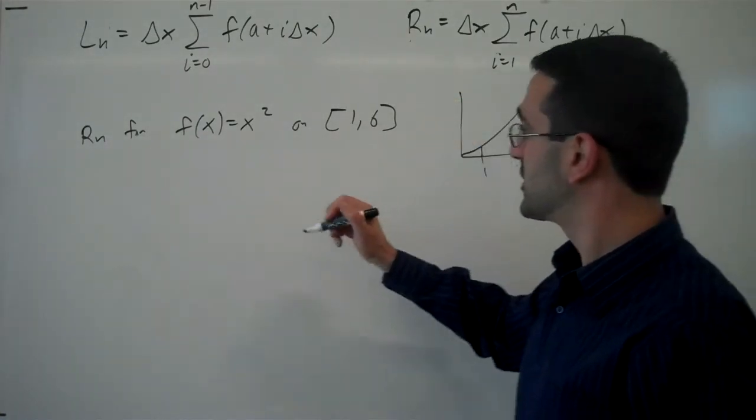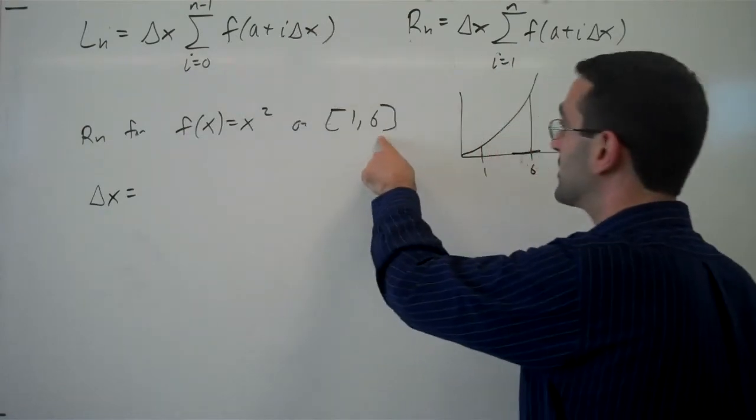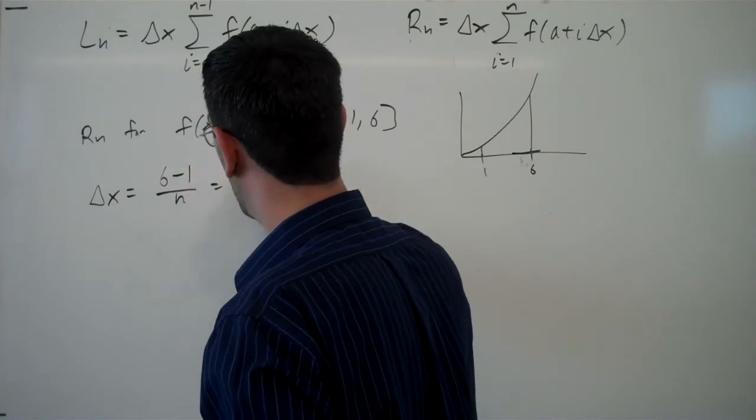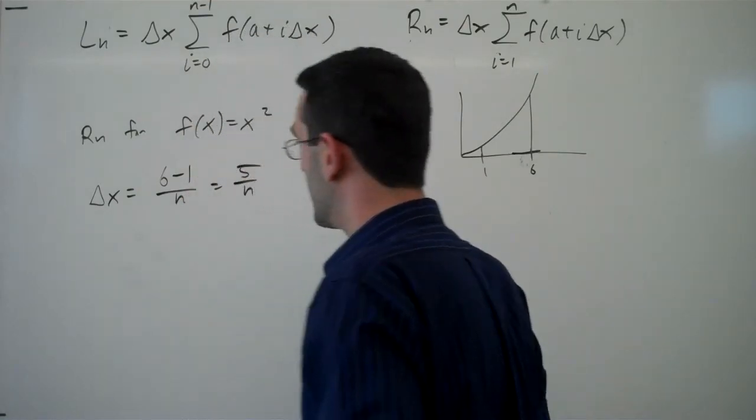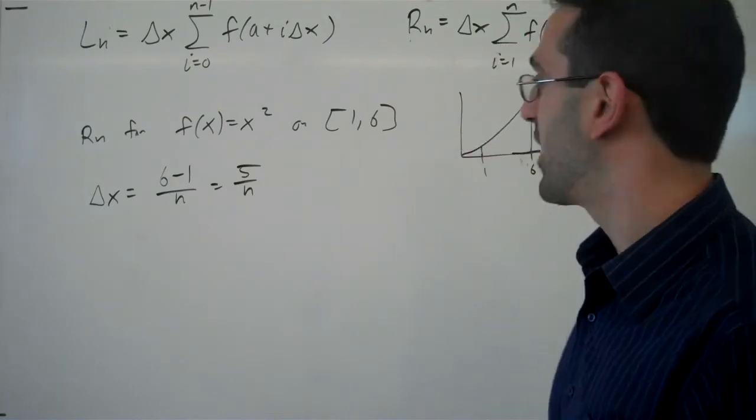Using our function here, first we need to talk delta x. So delta x, remember, is b minus a over n, so in this case 6 minus 1 over n, or 5 over n. Now we don't know n, so we just have to leave that as an expression, 5 over n.